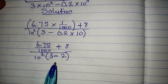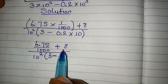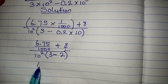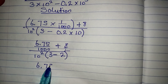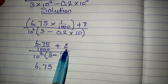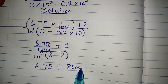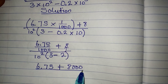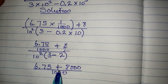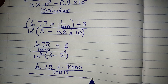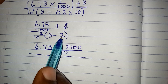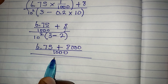The next thing is to find the LCM of the numerator. We treat 8 as 8 over 1, so we add: 6.75 plus 1000 times 8, which gives 8000, all over 1000. That's for the numerator. The denominator becomes 3 minus 2 which is 1, so we have 10 squared times 1, which is just 10 squared.